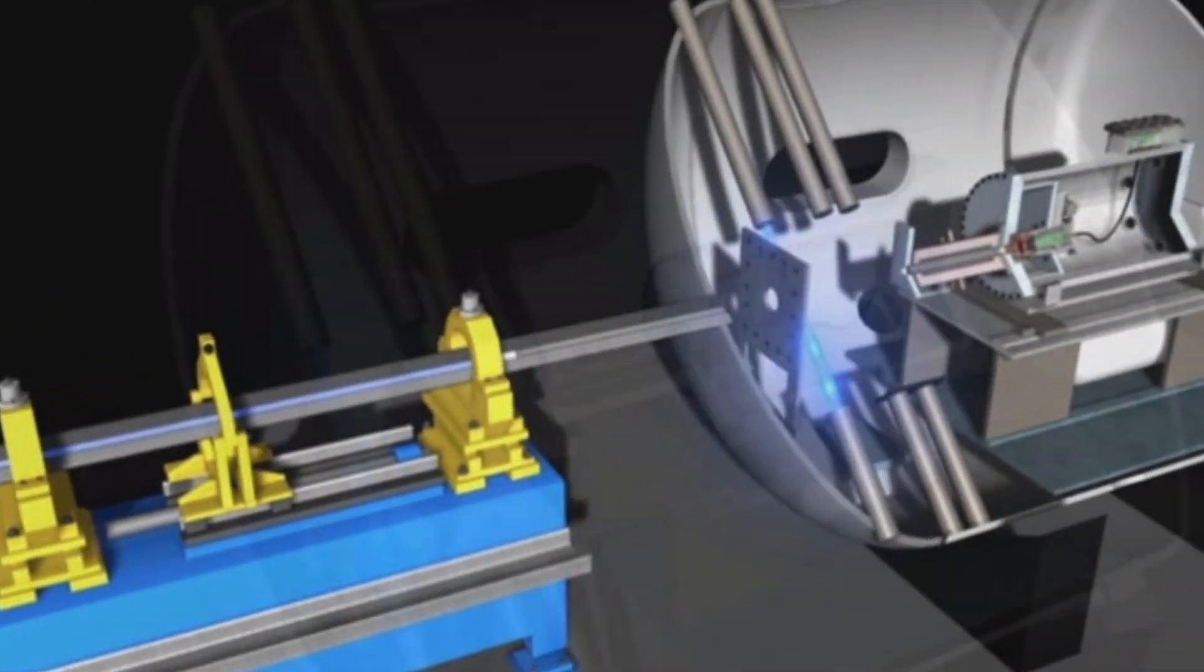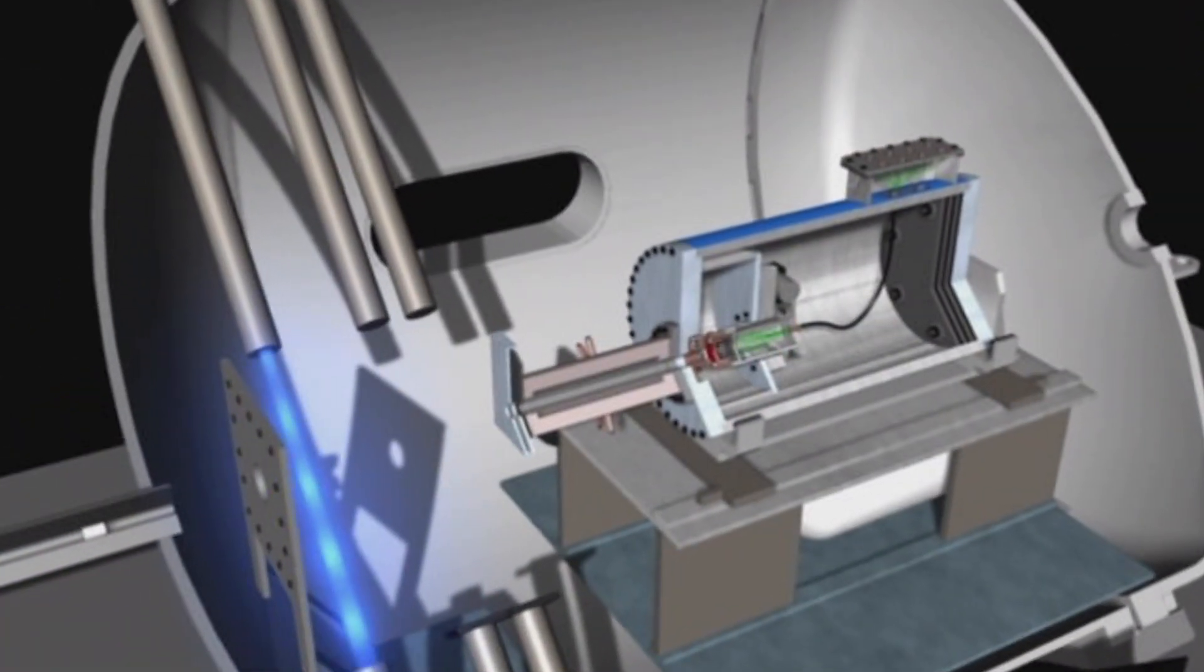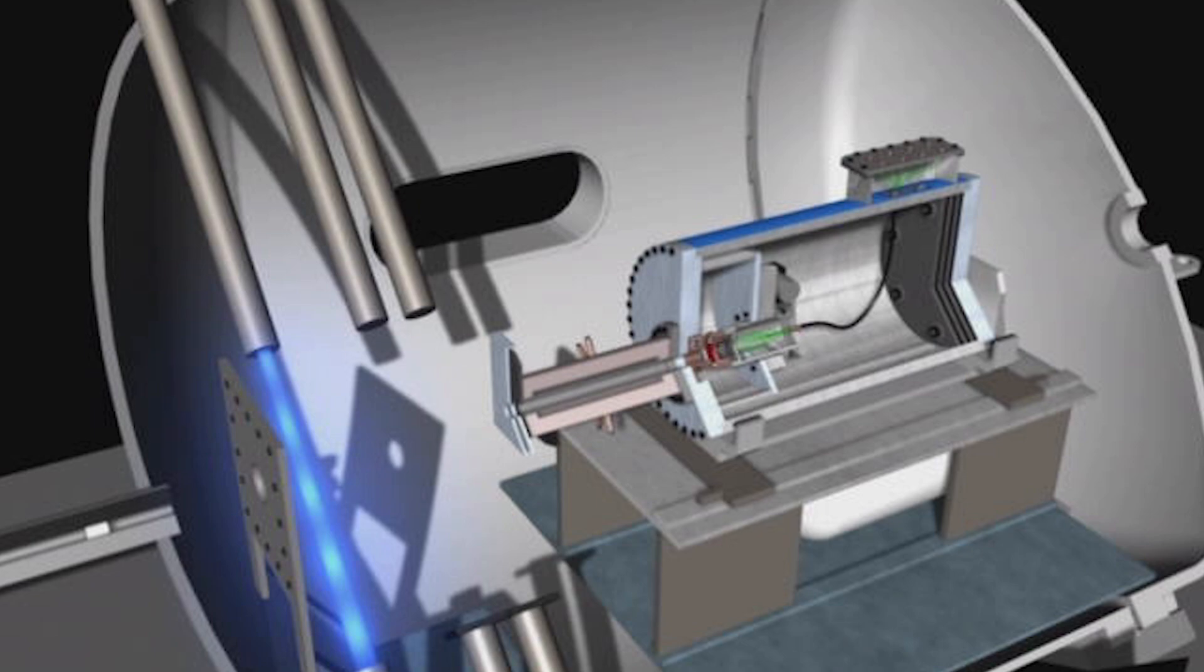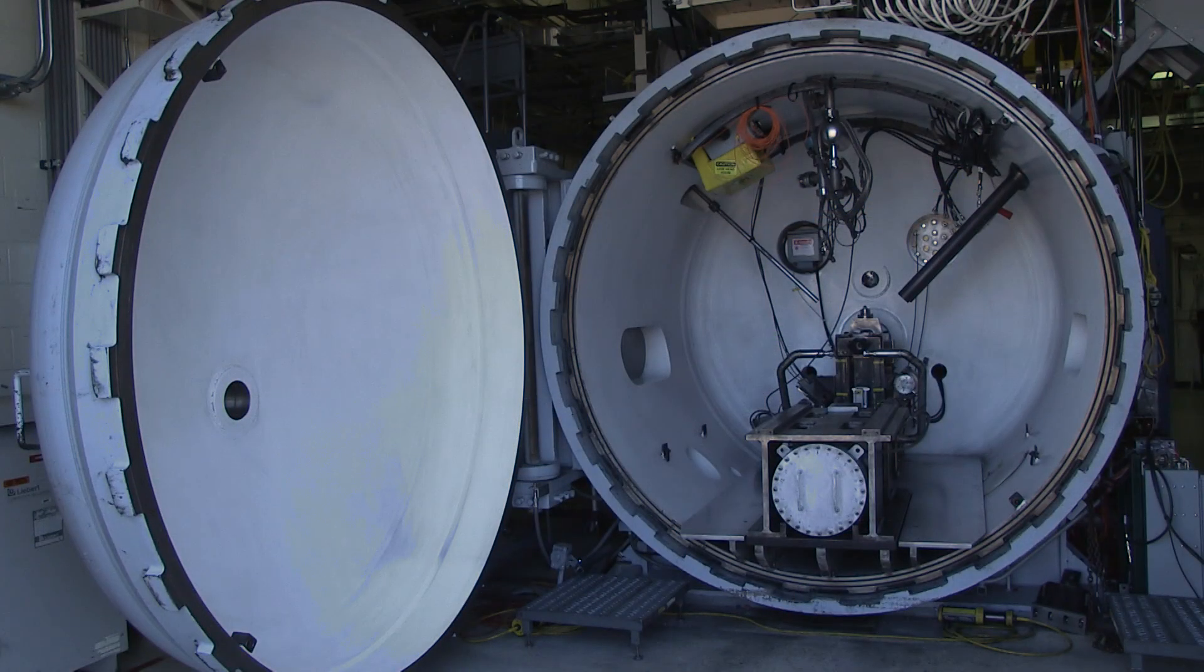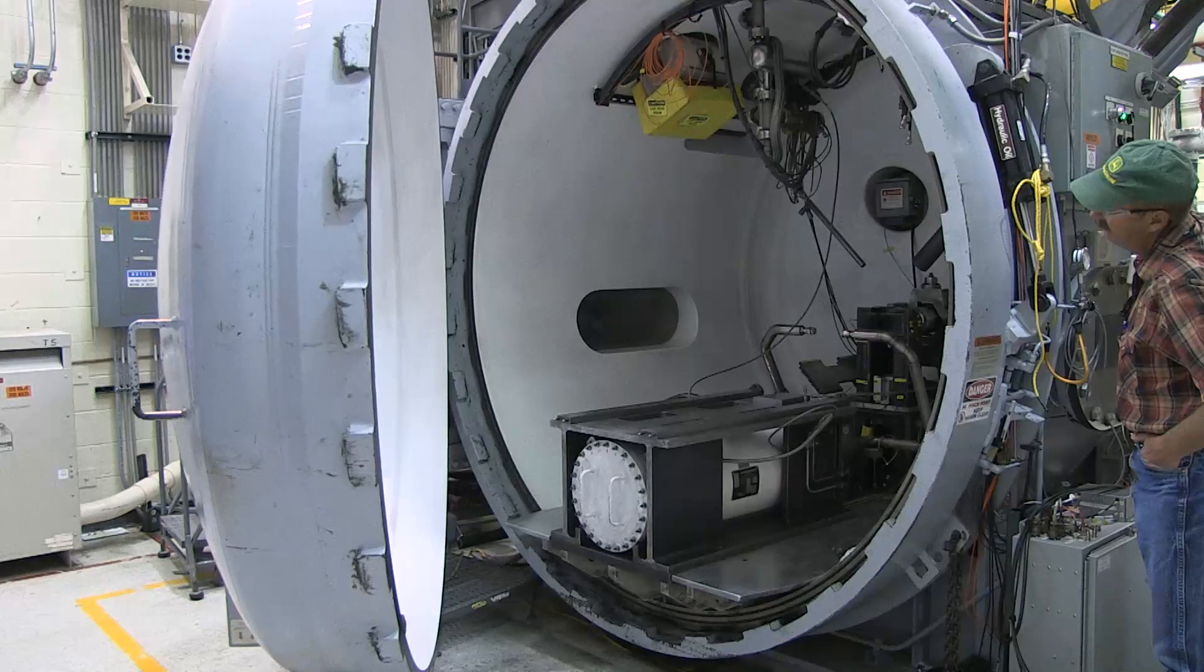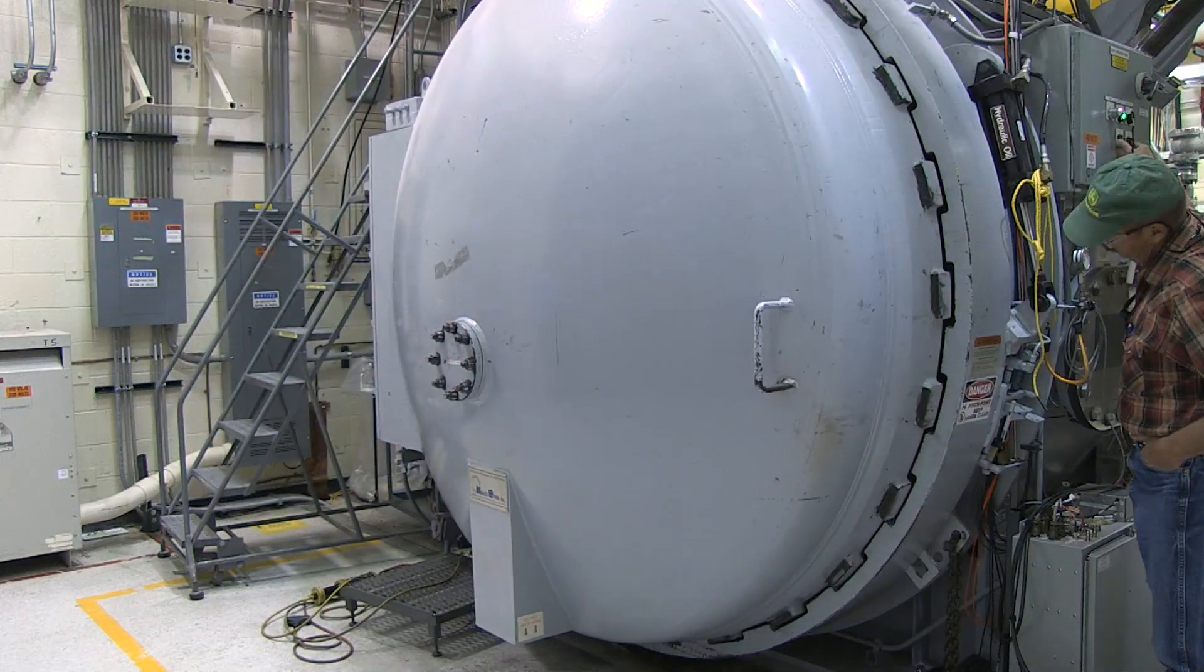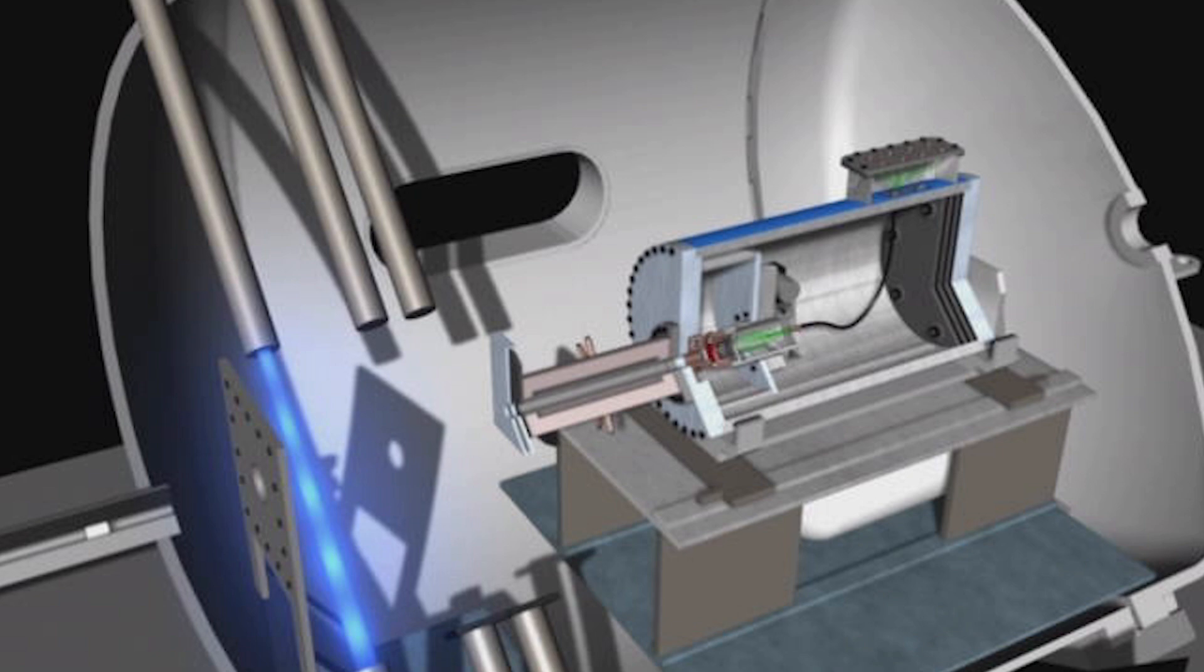At the end of the launch tube, the projectile enters the secondary confinement chamber, from which all air has been evacuated. This chamber is eight feet in diameter and serves as a secondary barrier against any release of material to the environment. At this point, the projectile is traveling up to eight kilometers per second, or 18,000 miles per hour.